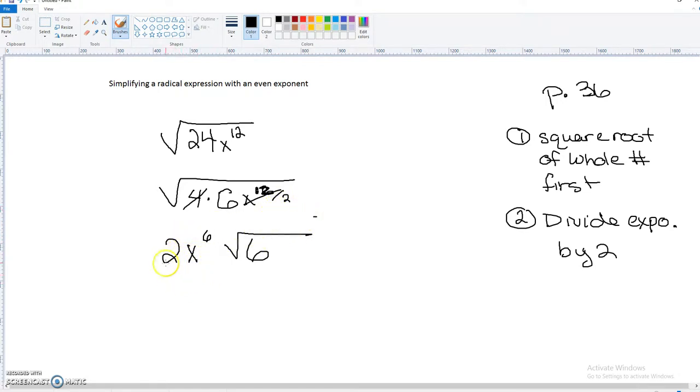So as you're going to put this into Alex, make sure you're putting 2x squared. Press that right arrow key, and then press the radical sign and put in 6. And this will be your final answer.